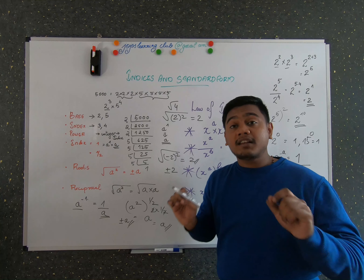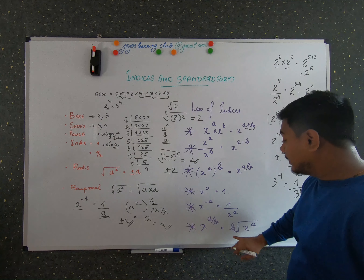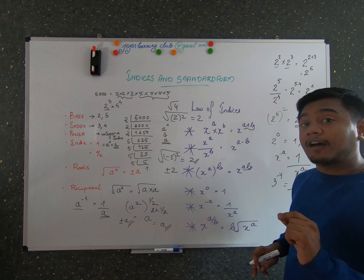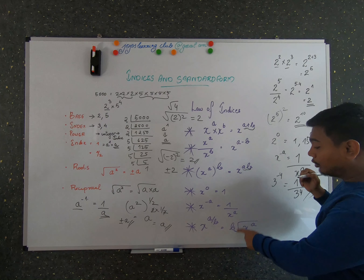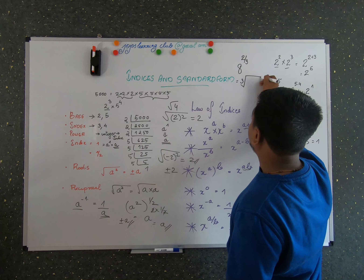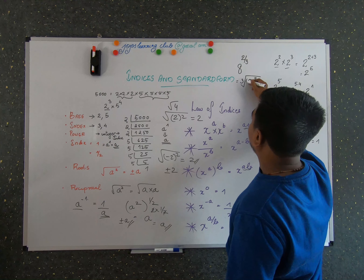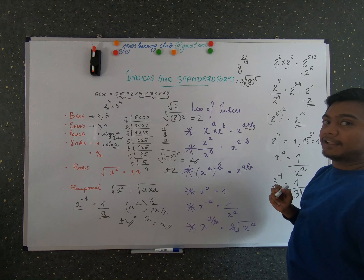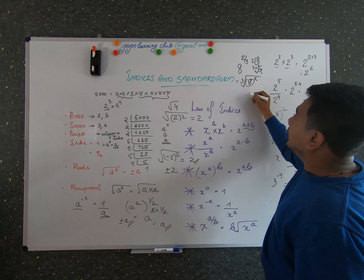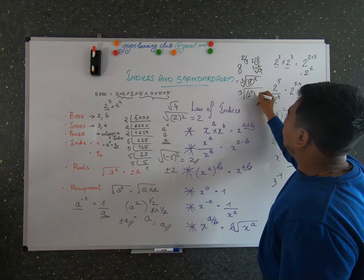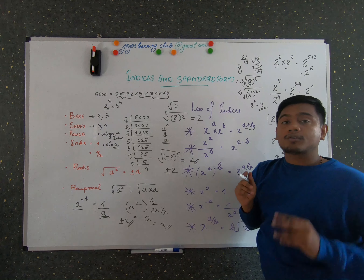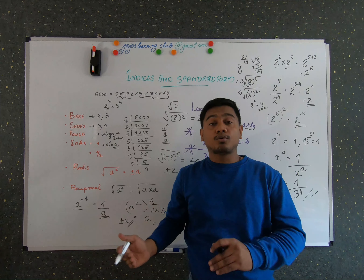The sixth law: when the index value is a fraction, the denominator b represents the root and the numerator a represents the power. So x raised to a/b equals the b-th root of x, all raised to a. For example, 8 raised to 2/3 means the cube root of 8 raised to the power of 2. The cube root of 8 is 2, so 2 squared equals 4.